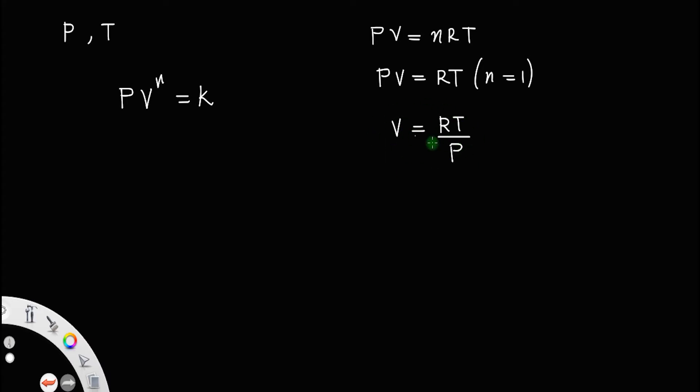So if you substitute the value of V in here, we have P into V is actually RT divided by P raised to gamma equal to a constant K.